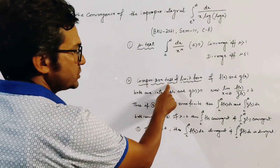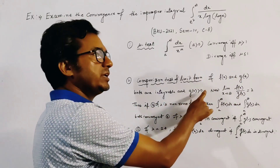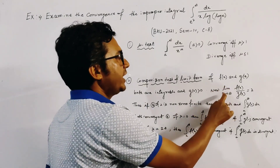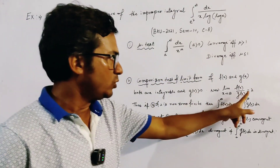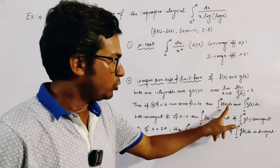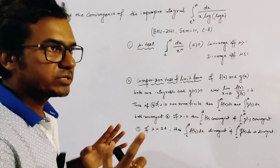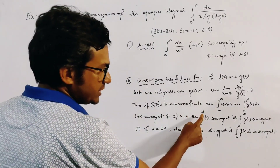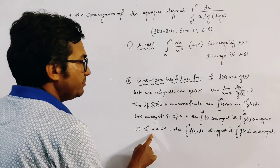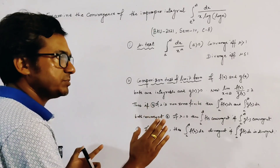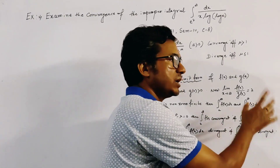The second result is the comparison test in limit form. It states that if f(x) and g(x) are both integrable functions with g(x) greater than 0, and the limit as x tends to infinity of f(x)/g(x) equals λ, then: if λ is non-zero finite, both integrals are convergent or both divergent. If λ equals 0, the integral of f(x) converges if the integral of g(x) converges. If λ is plus or minus infinity, the integral of f(x) diverges if the integral of g(x) diverges.